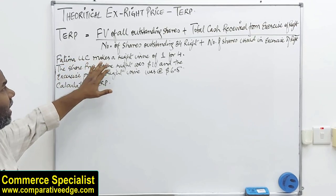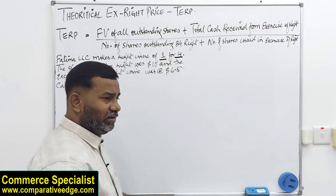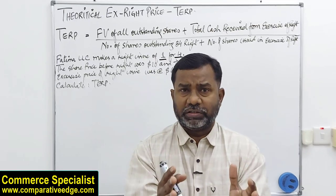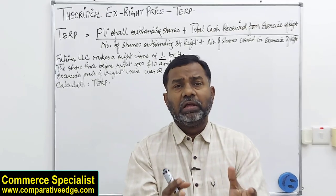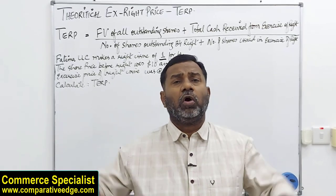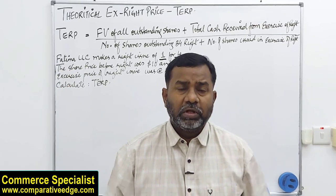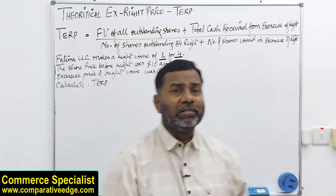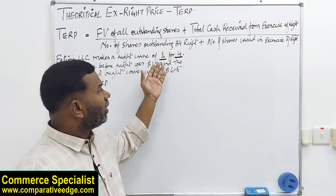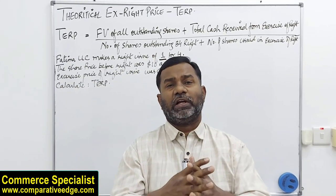For example, Fatma LLC makes a right issue of 1 for every 4 shares already held. This means if you have 4 shares already in the company, you will be entitled to 1 new share. Most of the time when a company announces a right issue they announce it like this — 1 for every 4 existing shares, 2 for every 5, 1 for every 5 — so that a fair distribution of right shares can be done.